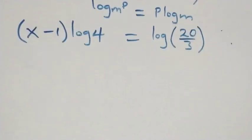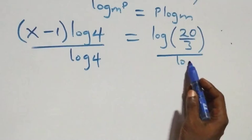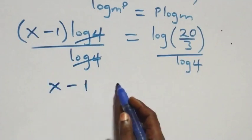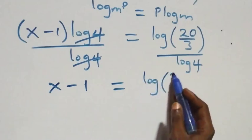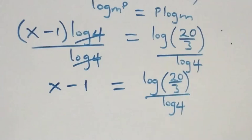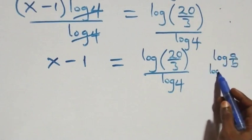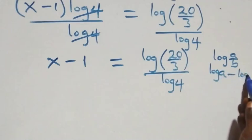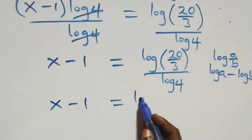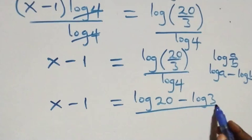The next step: we divide both sides by log 4. The log 4s cancel each other and we have x minus 1 equals log(20/3) over log 4. Then, following the log quotient rule, log(a/b) over log b can be written as log a minus log b. So what we have becomes x minus 1 equals log 20 minus log 3, over log 4.